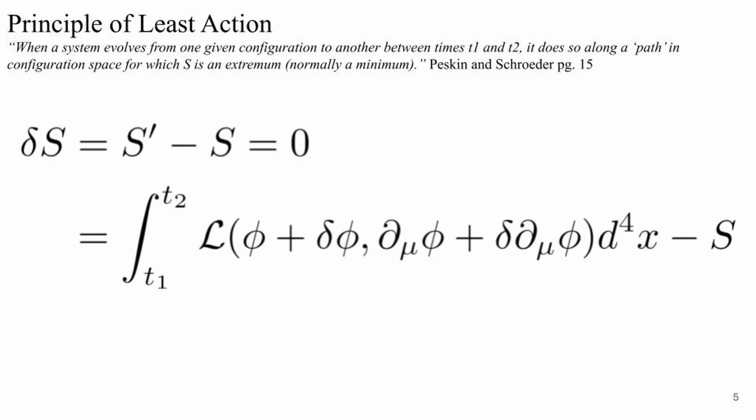The way that we can represent this mathematically is using a functional derivative. The functional derivative takes a function and perturbs it by some infinitesimally small other function. We have to use a functional derivative instead of a classical derivative because the action itself is dependent on the path that you take when integrating.